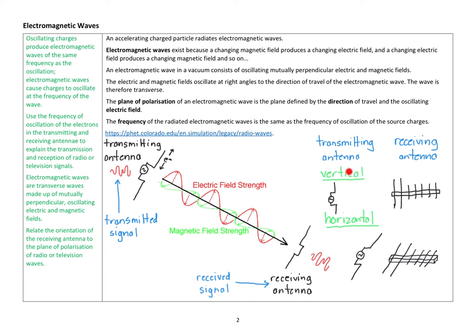I know in Tumbi Bay, we have vertical orientation. If you go to Port Lincoln, I think they have horizontal orientation, and that's basically because those two towns are about 50 kilometres apart, and that just minimises the interference between the two signals.